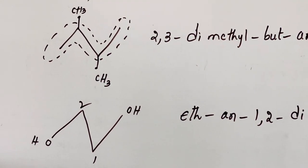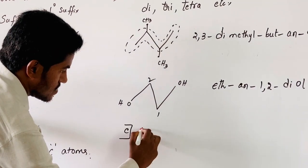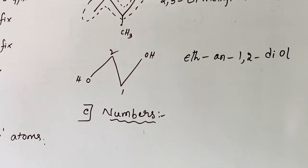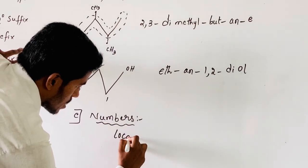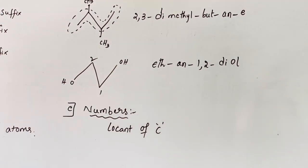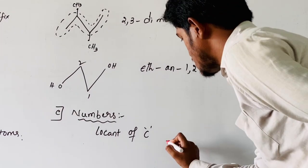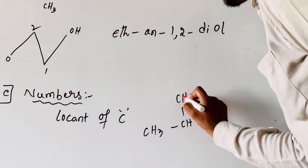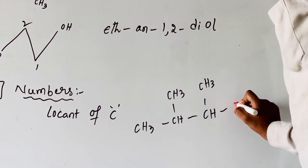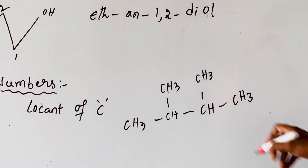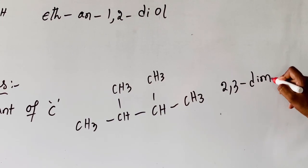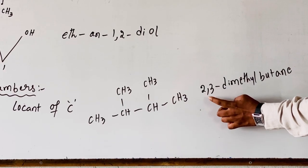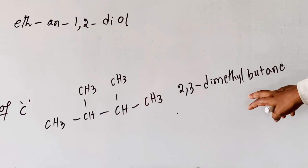After the numerical prefix description, the next topic is numbers. What do the numbers represent? The numbers represent the locant of carbon. While taking the same example: 2,3-dimethylbutane. The numbers 2 and 3 indicate the locants of the methyl substituents. 'Di' is the numerical prefix, 'methyl' is the secondary prefix, 'but' is the root word, and 'ane' is the primary suffix.